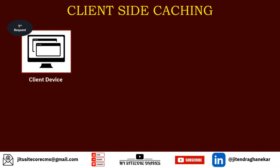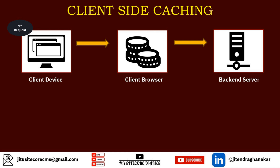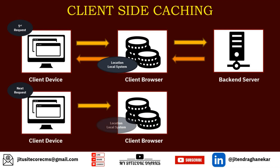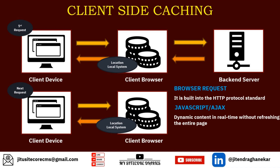Now let's see what is client-side caching. On the first request, the client device goes through the client browser, which requests data from the backend server. That data gets stored on the client browser — your local system. The client browser holds the data, and when you access it again, the data comes from the client browser without hitting the external server. For the client browser, you have browser caching, which is built into the HTTP protocol standard — your data gets stored in the browser request itself.